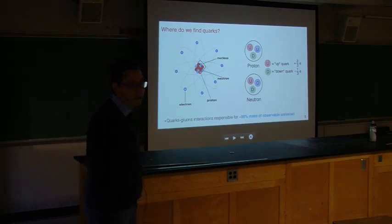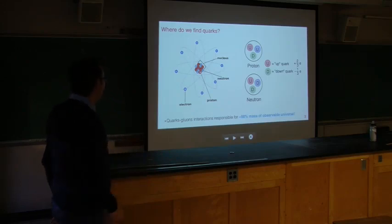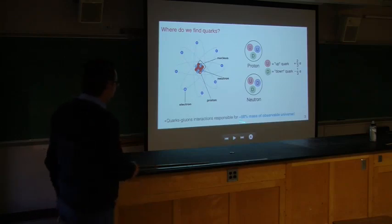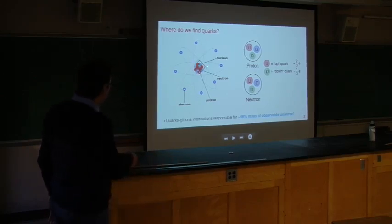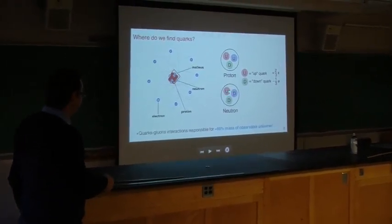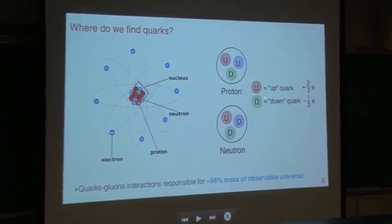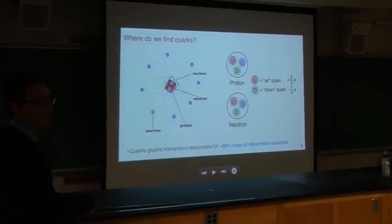So where do we find quarks? It turns out quarks are quite common in nature. Interactions between quarks are actually responsible for about 98 percent of the mass of the observable universe. In the familiar picture of the atom, the nucleus consists of protons and neutrons with electrons in the vicinity. A proton contains two up quarks and one down quark; a neutron contains one up quark and two down quarks. The up quark has charge +2/3 and the down quark −1/3, giving a proton charge of +1 and a neutron charge of zero.